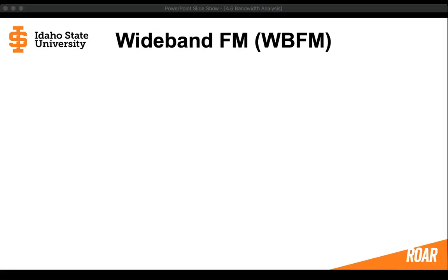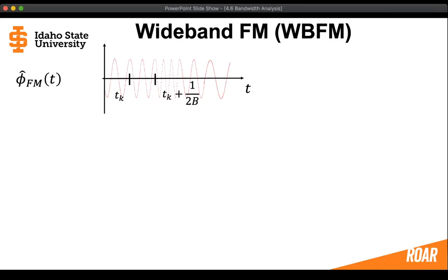In the previous video, we came up with an approximation for the frequency modulated signal that was based on the staircase approximation. We're trying to find the bandwidth for this frequency modulated signal, but we realized that signal is going to be too complex to find the Fourier transform. So we're going to need to break up this signal even further so that we can take the Fourier transform and find the frequency domain information. Let's continue this process by looking at just cell k.